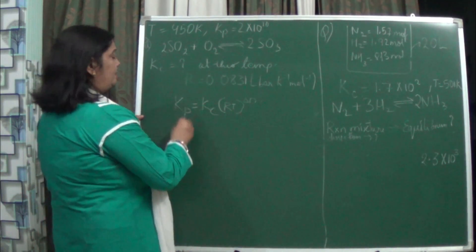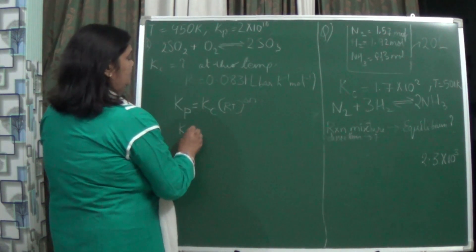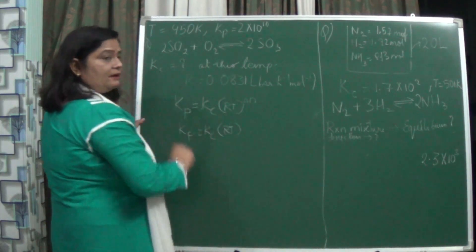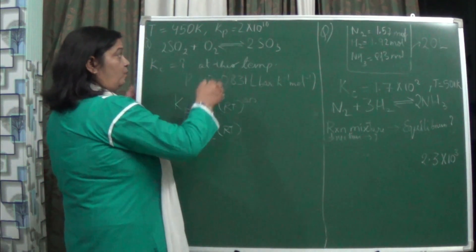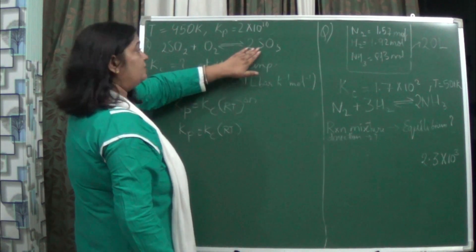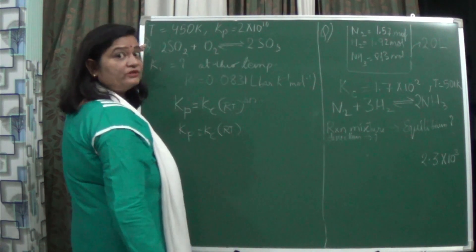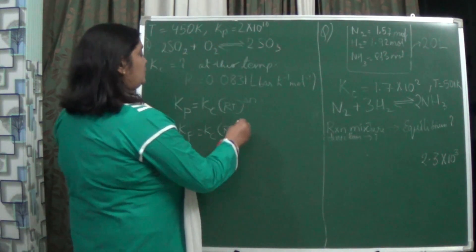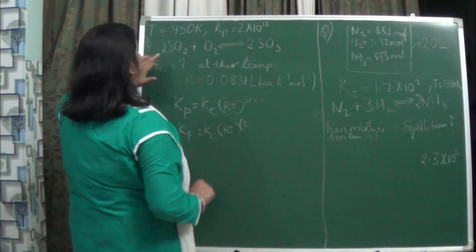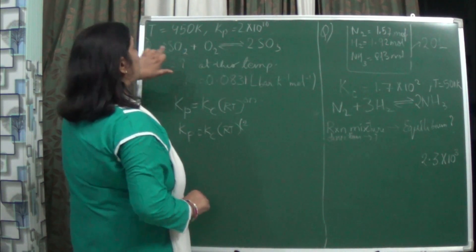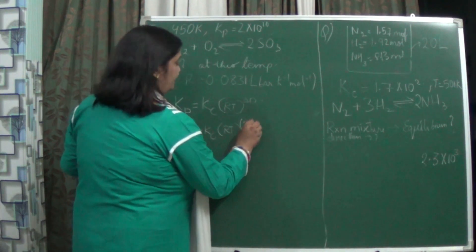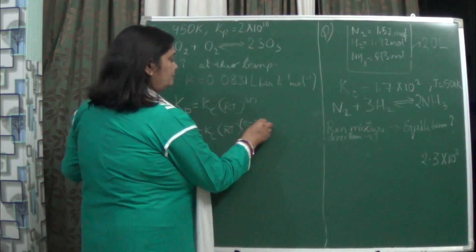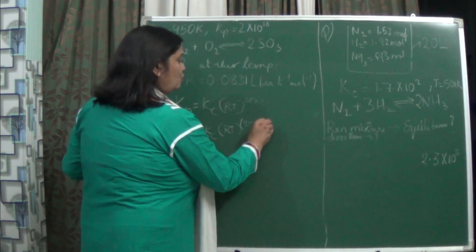Now do it step by step. Kp equals Kc into RT to the power delta n. Delta n, the change in number of moles, is the sum of moles on the product side minus the sum of moles on the reactant side. The sum of moles in the product side is 2, and the sum of moles in the reactant side is 2 plus 1, that is 3. So the value of delta n is minus 1.